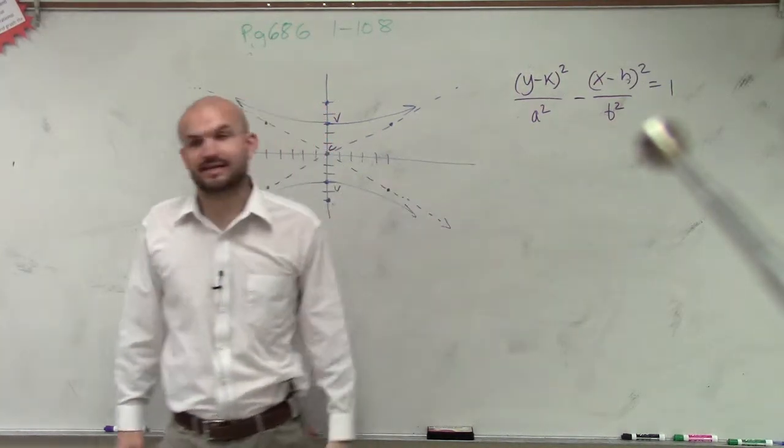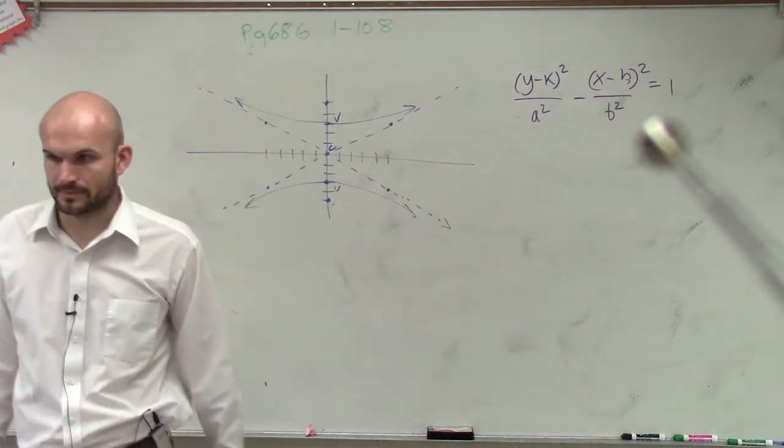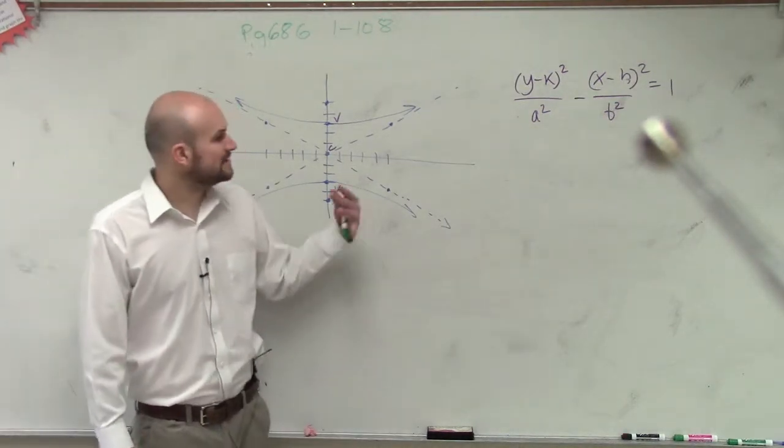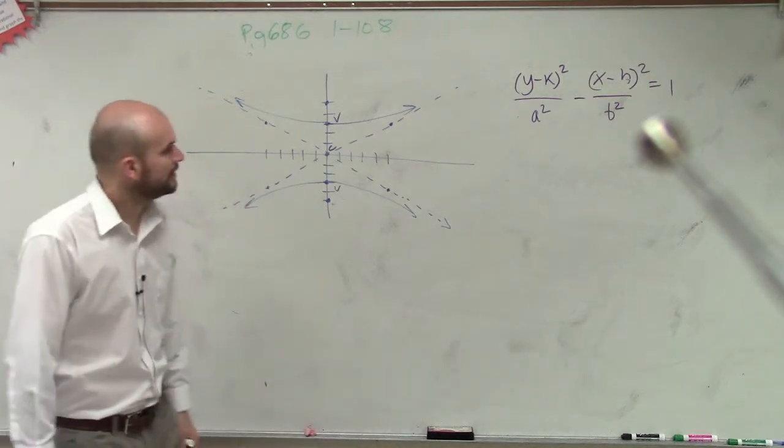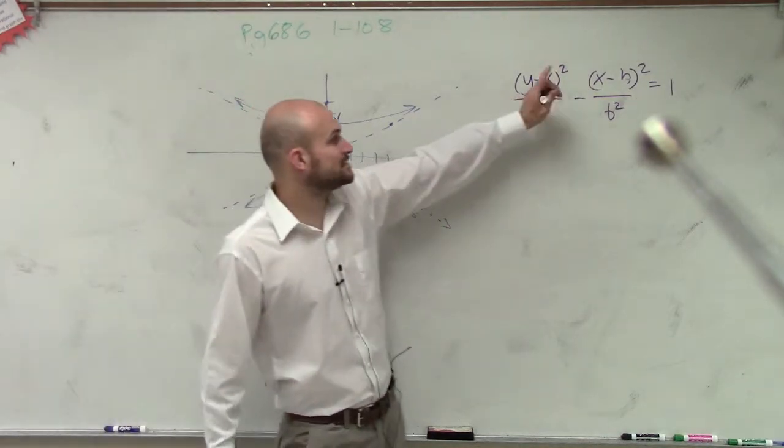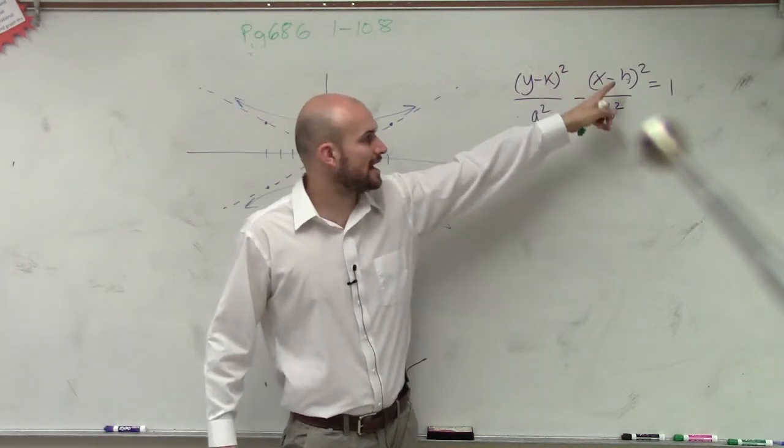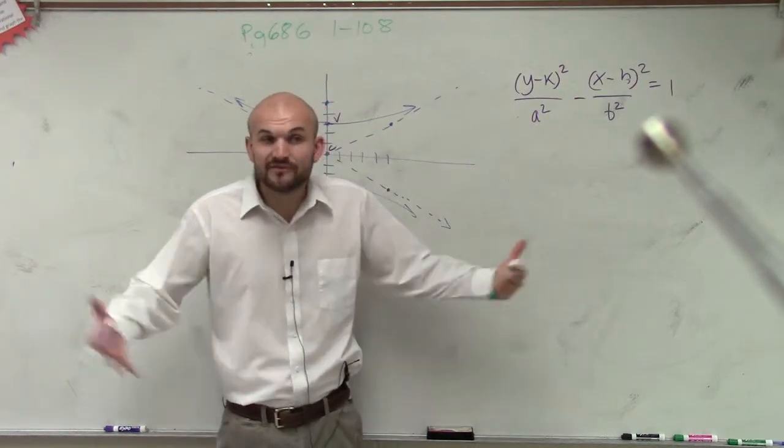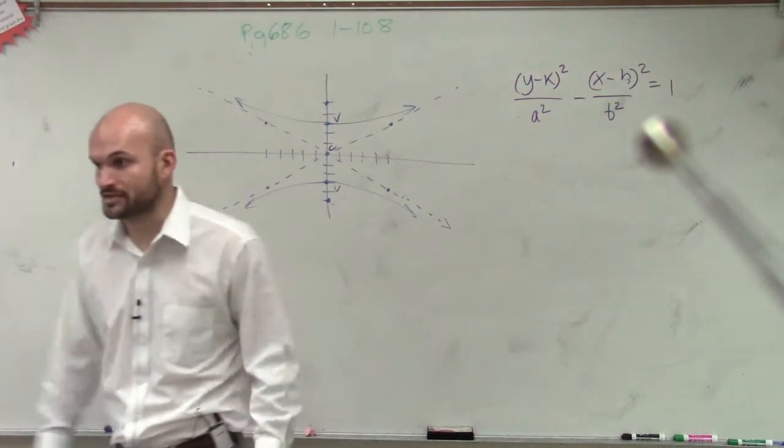So since it's vertical, our y is over our a. Remember, hyperbolas, the a and b don't change. It's always a² minus b². So they have (y - k)² over a². Everybody good? All right.